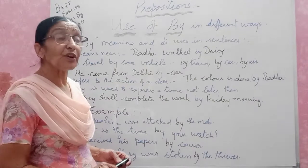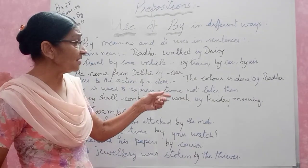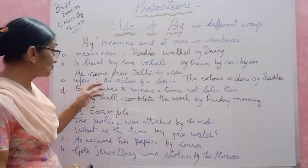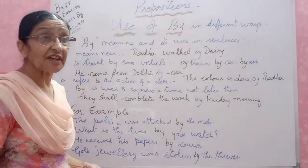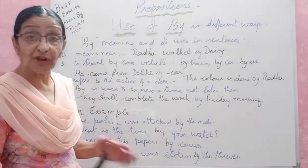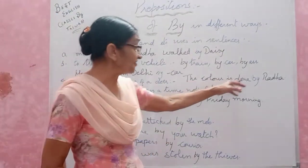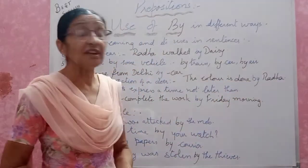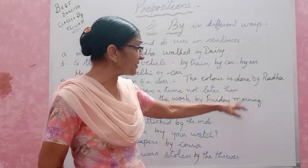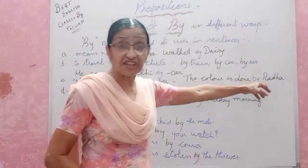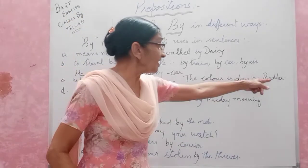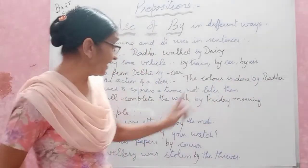It means she is painting or whatever she is doing — who has done it? By Radha. The doer is someone who works on it, who is doing the work. 'The colour is done by Radha' — colour here means the painting, the artwork, anything of that sort. This colour is done by Radha, who has done it — by Radha. So this is done by Radha. That is the third meaning.